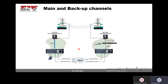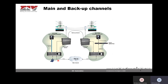The second application is main and backup channel in the same device. In this example, the teleprotection is equipped with two communication interfaces — one is the main channel and the other is the backup channel, or main-1 and main-2. So the teleprotection is able to provide redundancy in terms of communication interface.